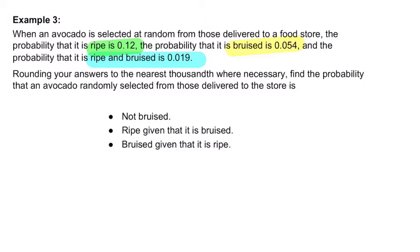Rounding your answers to the nearest thousandth, find the probability that an avocado randomly selected from those delivered to the store is not bruised, ripe, and bruised given that it is ripe. Okay, so not bruised.